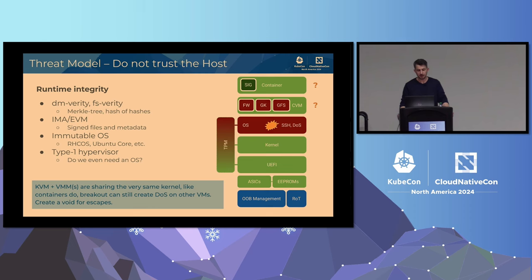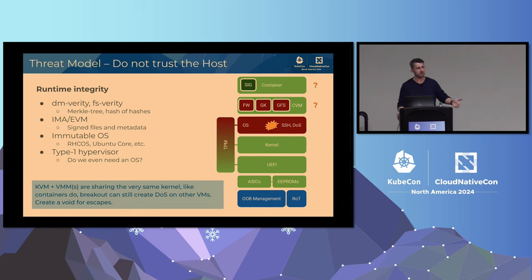One problem we have with KVM plus VMMs — be it QEMU, Cloud Hypervisor, or others — is that they share the very same kernel. That's the same problem we have with containers, which is why we do sandboxing in the first place. A breakout can still create a denial of service on other VMs. If you're running a confidential container, data is still encrypted, but you can still kill all those QEMU processes, and all the VMs are gone. So what we're looking at upstream is running Kata and confidential containers with a type-one hypervisor. Why do we need a full-blown operating system running underneath our VM? We just need VM management.